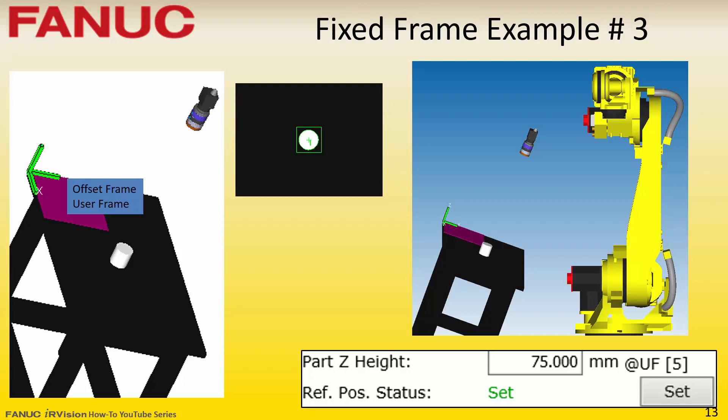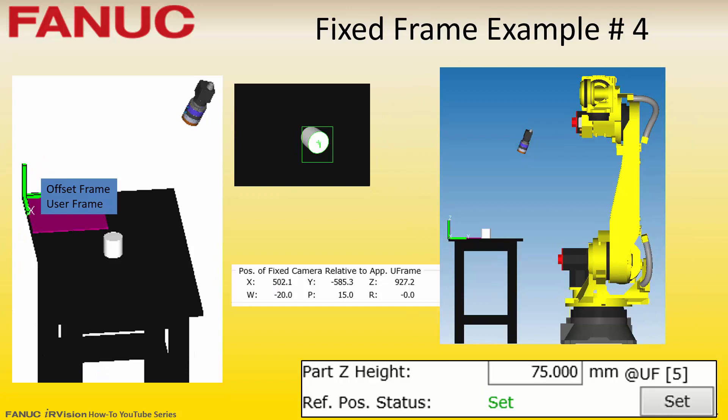In this last fixed frame example, while as a general rule the offset frame Z axis should be parallel to the optical axis of the camera, with some applications it is simply not possible to have the camera normal to the offset frame. With a perspective calibration, accurate positional information is still obtained for a camera that is at an angle to the offset frame. In this example, the offset frame Z axis is perpendicular to the table, and the part Z height is positive 75 millimeters. It is not possible to use an orthogonal calibration for a camera which is not normal to its offset frame.